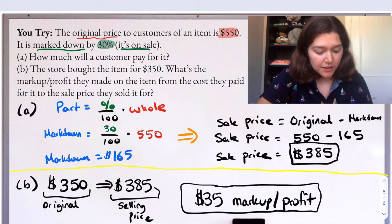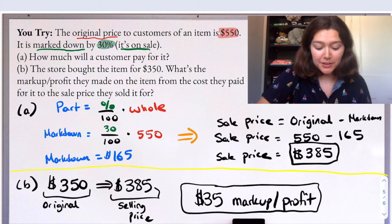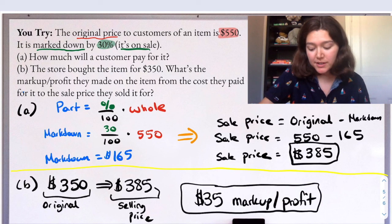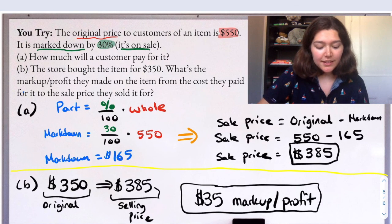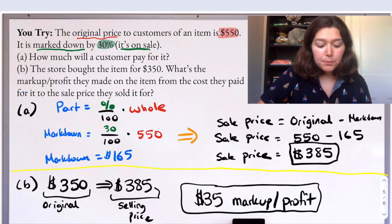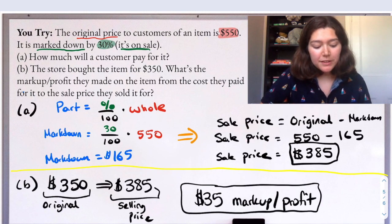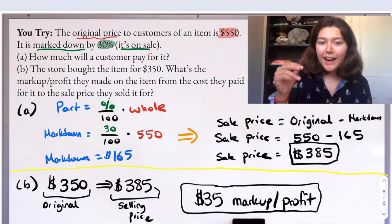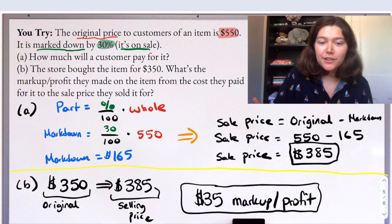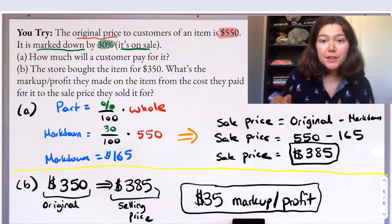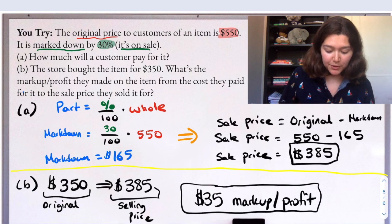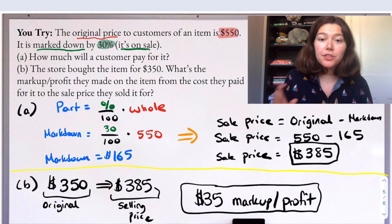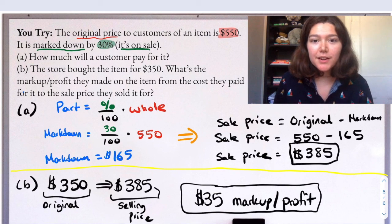Okay, great job, great effort. So for part A, we get the markdown amount, the amount that we are saving here is $165. The original cost of the item is $550. So then we do 550 minus the markdown 165, and you get $385 as the sale price, the amount the customer will pay. For part B, the store bought that item for $350. What's the markup or profit they made on the item from the cost they paid for it to the sale price they sold it for? So ultimately, they put this item on sale, but they're still making a profit from how much they bought. So that's what we're seeing here in part B. They ultimately sold the item for $385, but they bought the item for $350. So we can subtract that, 385 minus 350 is $35. So there's a $35 markup or profit that the store ultimately made on this item. Great job, everyone.